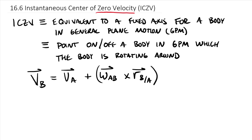So the cool thing here is that if this point, say point A, is an ICZV, then this velocity equals zero. So then we're left with, instead of an additive vector equation, we're left with an equation that looks exactly like the equations we use for fixed axis rotation, where the body is rotating around a fixed axis point.